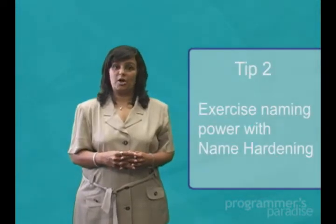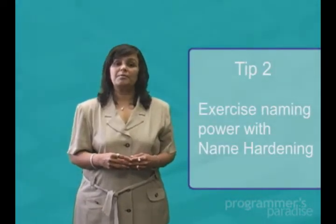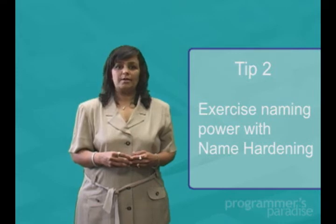Tip 2: exercise naming power with name hardening. The name hardening wizard provides a way to override inheritance of names and block name changes to reset within a model. Using the wizard, you can select the object types and object instances for which you need to set logical and physical names within the model, instead of using the inherited name value.